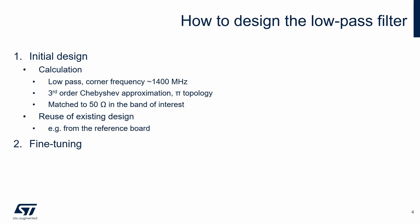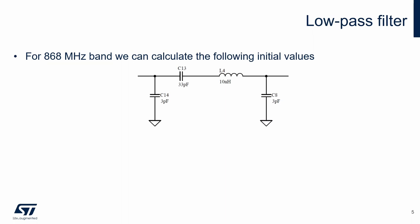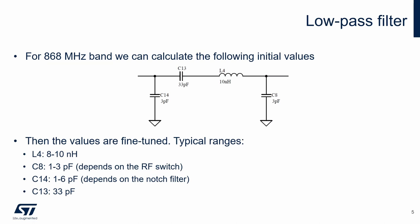The next step is fine-tuning of the filter. This step includes the impact of all parameters of a particular PCB which were not included in the previous steps. Fine-tuning may be done by simulation or measurement. In this video, calculation and measurement are shown. For 868 MHz we can calculate the following initial values of the filter. CF13 is the DC block. The calculated values are ideal and can be fine-tuned in the real design.